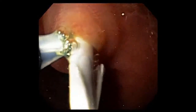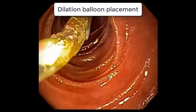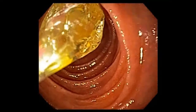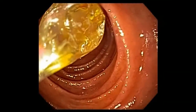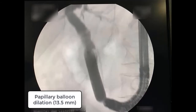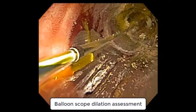Contrast injection showed a quite large stone, and due to the challenging position, the decision was made to proceed with balloon sphincteroplasty. The balloon was inflated under endoscopic and fluoroscopic guidance until the disruption of the radiological waist. In some cases, endoscopic visualization may be helpful to reduce the risk of adverse events.